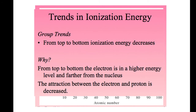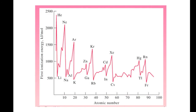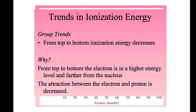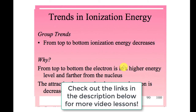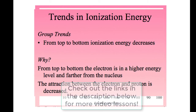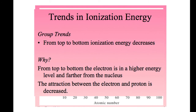For the group trend, going from top to bottom — lithium, sodium, potassium, rubidium, francium — ionization energy decreases. This is because as we go down, a new higher energy level is added and the electrons get further and further from the nucleus. As a result, it becomes easier to remove the electron from the atom, so ionization energy decreases going down a group.